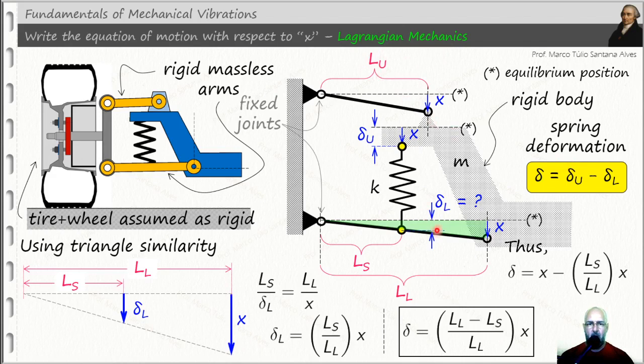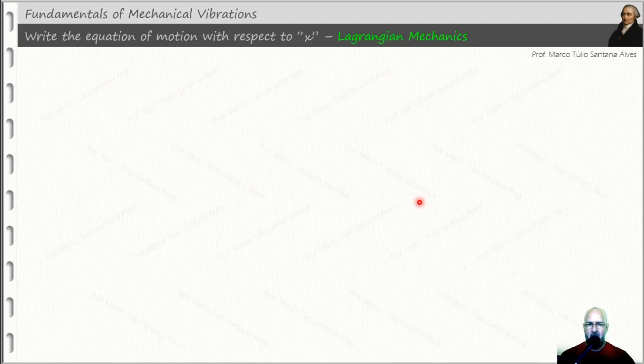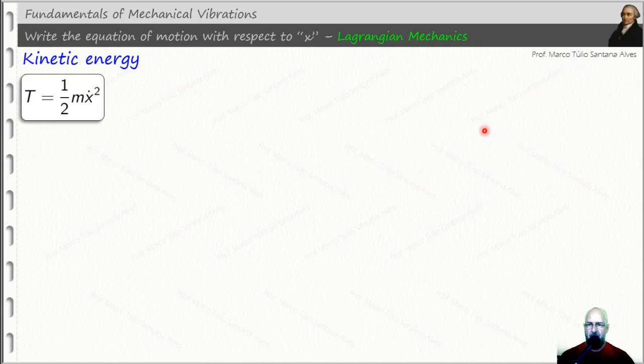Remember, we are using Lagrangian mechanics, so we need to calculate the potential energies. But in this case we have just one type of potential energy, just the elastic potential energy. So let's write the kinetic energy firstly.